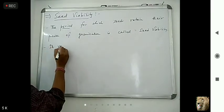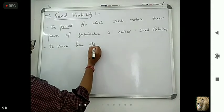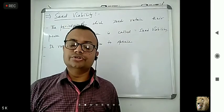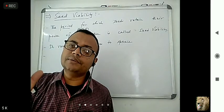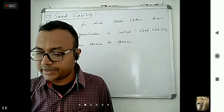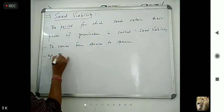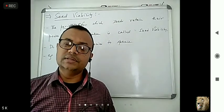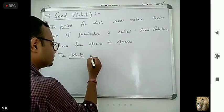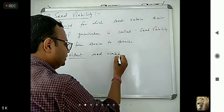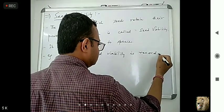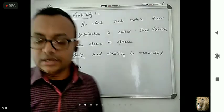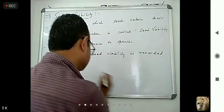Here two things you have to remember about seed viability. The oldest seed viability recorded till yet is for Lupinus arcticus. This is the most remarkable time period for seed viability that has been recorded.